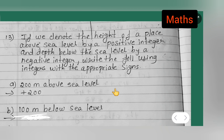For below sea level, we denote the depth below sea level by a negative integer. So 100 meters below sea level is represented as -100.